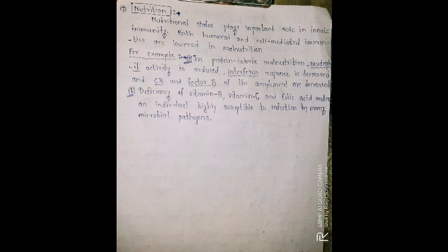The third point is nutrition. Nutritional status plays an important role in innate immunity. Both humoral and cell-mediated immunities are lowered in malnutrition.